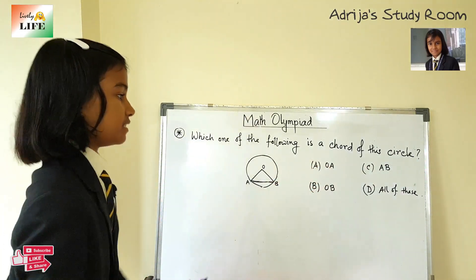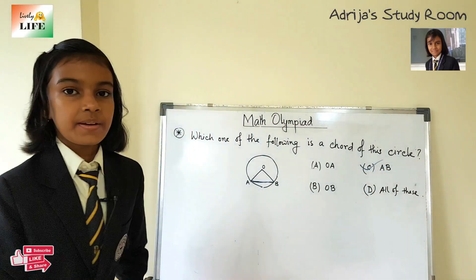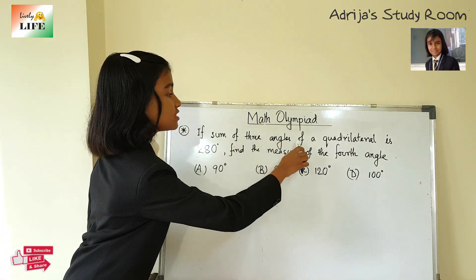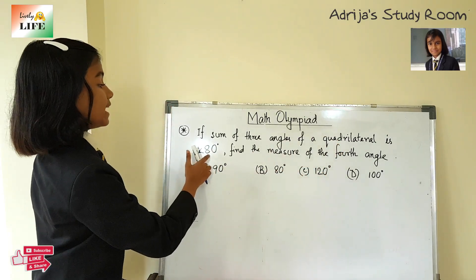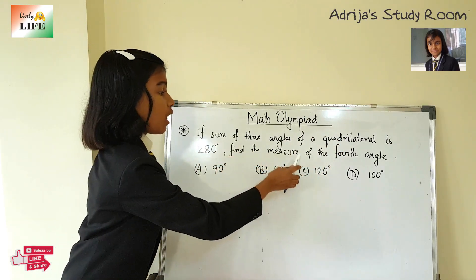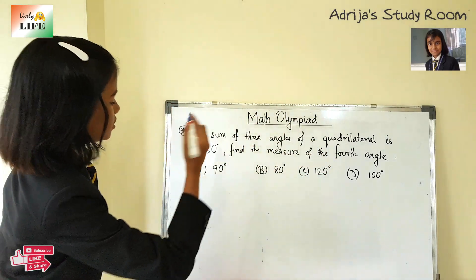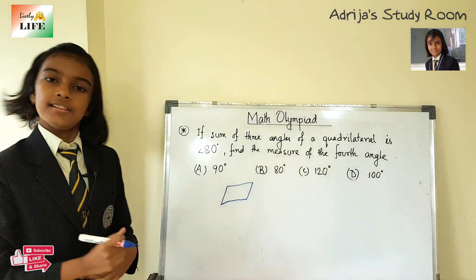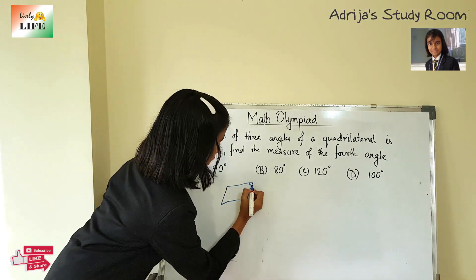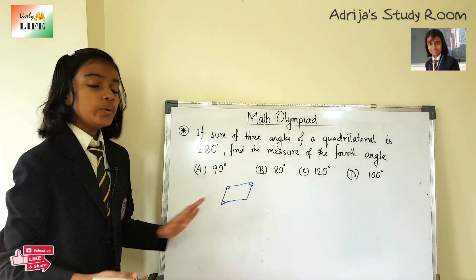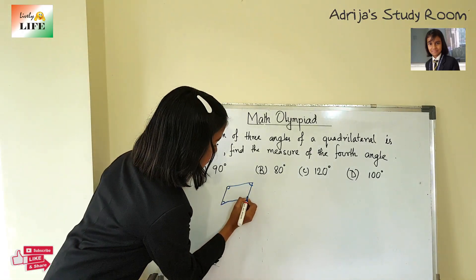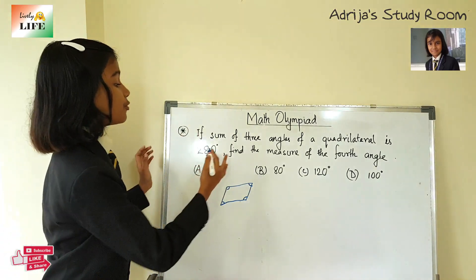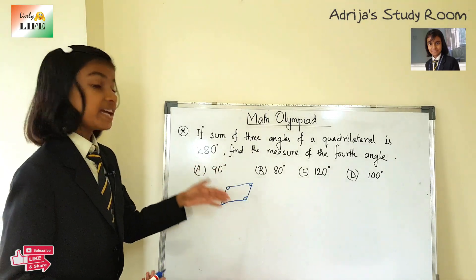So the answer is AB, which is option C. Let's solve the next question: if the sum of three angles of a quadrilateral is 280 degrees, find the measure of the fourth angle. Suppose this is a quadrilateral. The sum of these three angles is 280 degrees, and we know that in a quadrilateral all angles add up to 360 degrees.